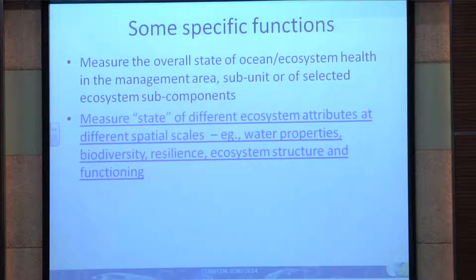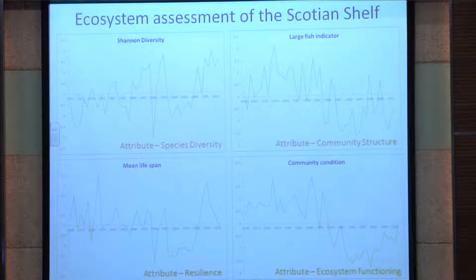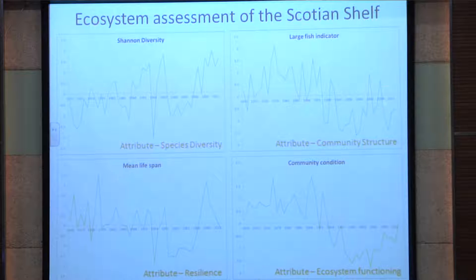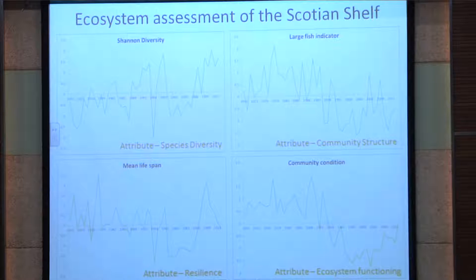Indicators also allow you to measure the state of different ecosystem attributes at different spatial scales — water properties, biodiversity, resilience, et cetera. To show some specific indicators from the Scotian Shelf: species diversity shows a lot of variability then a plunge and increase; the large fish indicator has decreased and now stabilized; a community condition indicator has decreased over time as a measure of ecosystem functioning; and a measure of resilience has also decreased. You can build up a mosaic picture of your system by looking at indicators of different ecosystem properties.